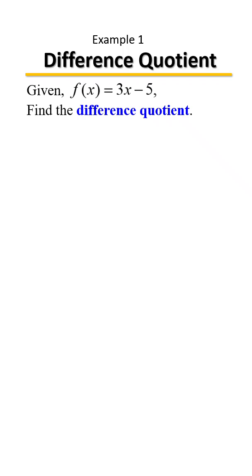Here we're given a function and we're asked to find the difference quotient. Here is the difference quotient formula. The formula is to first find f(x+h) minus the function you're given, all over h.